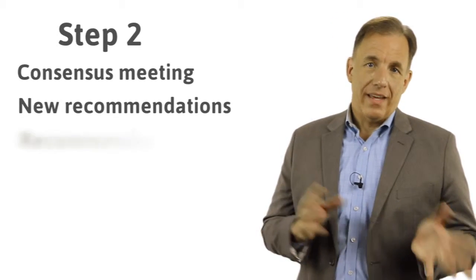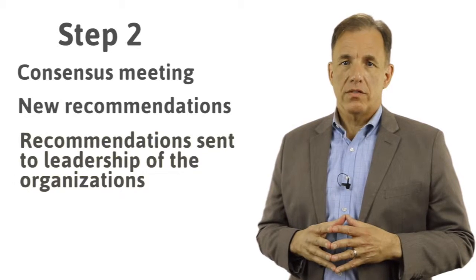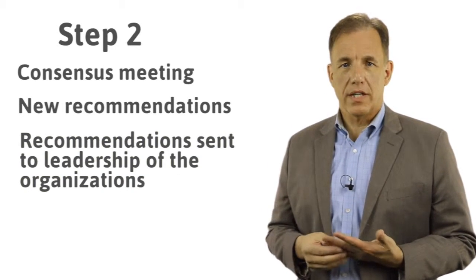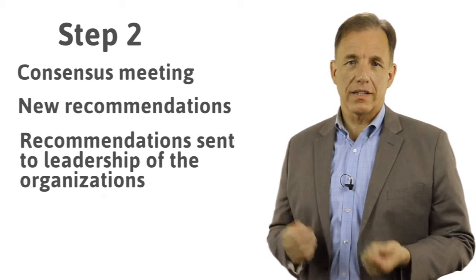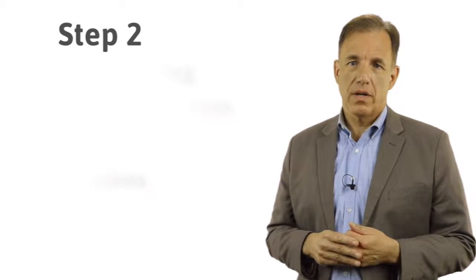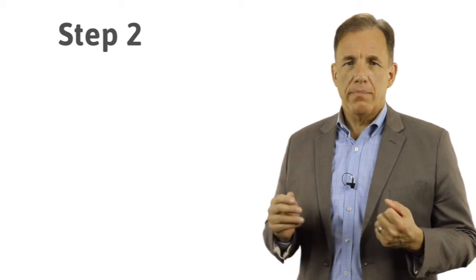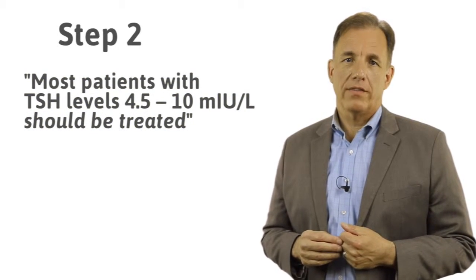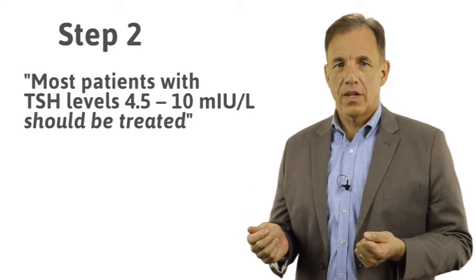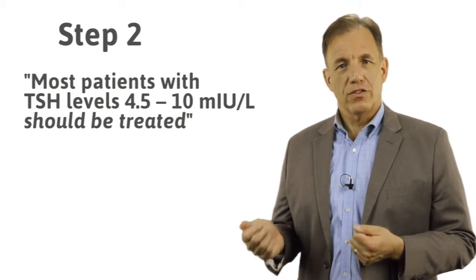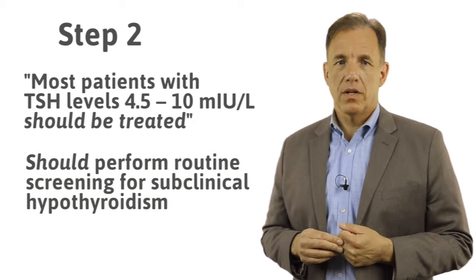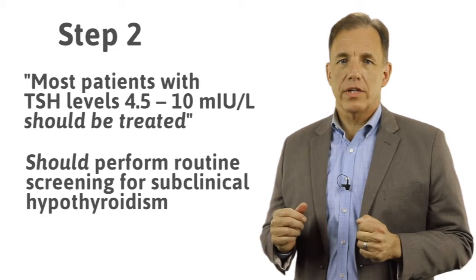These recommendations were then sent to the leadership of the organizations to get signed off. The result was new recommendations from the three societies that were markedly different from the previous group. What they basically said was that most patients with TSH levels between 4.5 and 10 should be treated. They also said you should perform routine screening for subclinical hypothyroidism — in direct contradiction to the earlier recommendation statement.